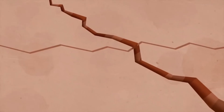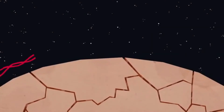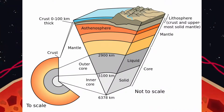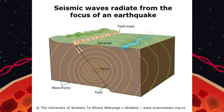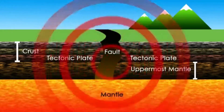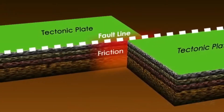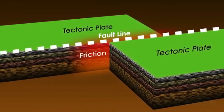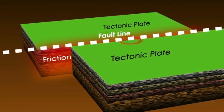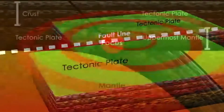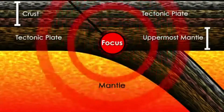An earthquake is the shaking of the surface of the Earth, resulting from a sudden release of energy in the Earth's lithosphere that creates seismic waves. An earthquake is caused by a sudden slip on a fault. The tectonic plates are always slowly moving, but they get stuck at their edges due to friction. When the stress on the edge overcomes the friction, there is an earthquake that releases energy in waves that travel through the Earth's crust and cause the shaking that we feel.